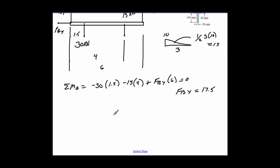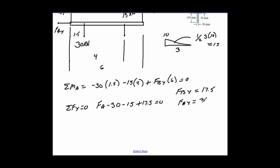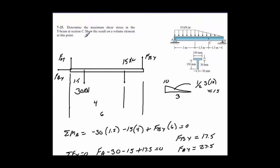Now all we have to do is sum forces in the Y equal to 0: FAY minus 30 minus 15 plus 17.5 equals 0. Actually, I'm going into a bit more detail than we need to — this problem is only asking for the moment at C. So we really only need to look at the beam from C, and I would look to the right, as the left side is more complicated.